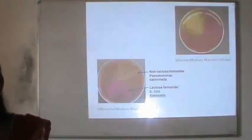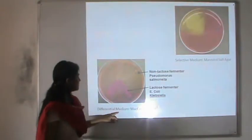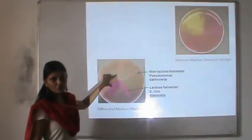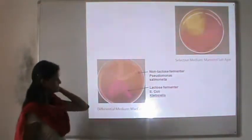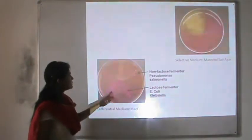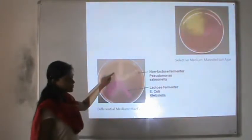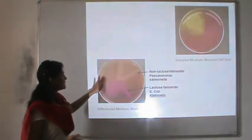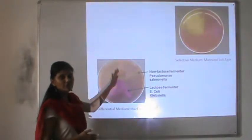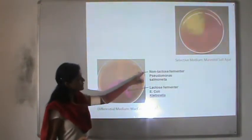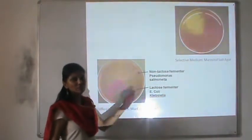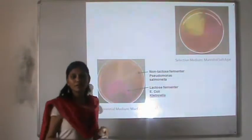Another example of differential medium is MacConkey agar. MacConkey agar contains lactose sugar and can differentiate between two categories of bacteria: lactose fermenters and non-lactose fermenters. If lactose is fermented, there is production of acid which turns the color of the pH indicator to pinkish. If there is no lactose fermentation, there will be no color change. So this media can differentiate between lactose fermenters and non-lactose fermenters. Examples: E. coli and Klebsiella species are lactose fermenters, whereas Pseudomonas and Salmonella are non-lactose fermenters.